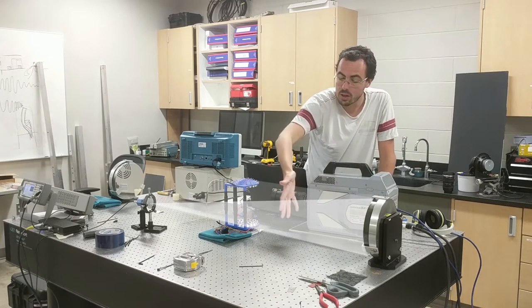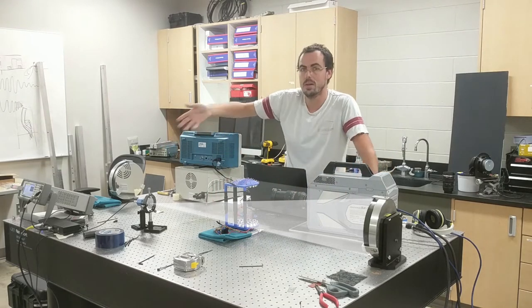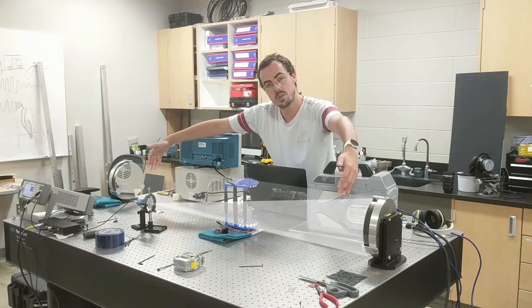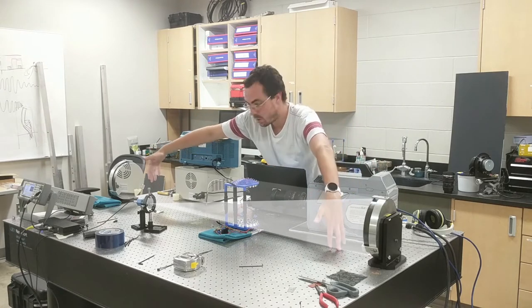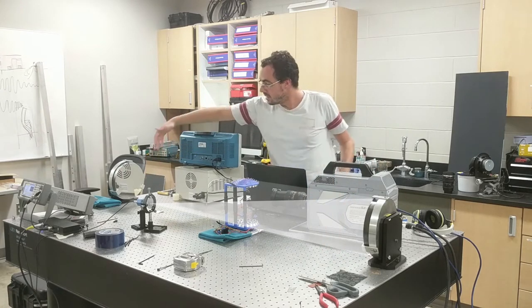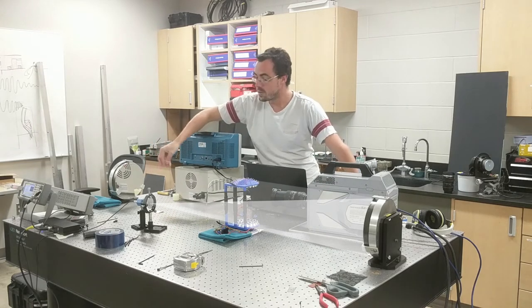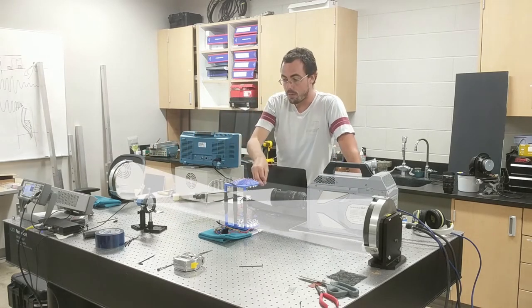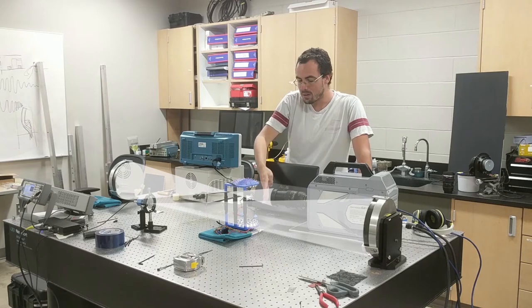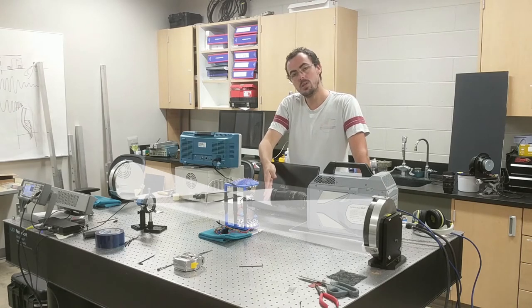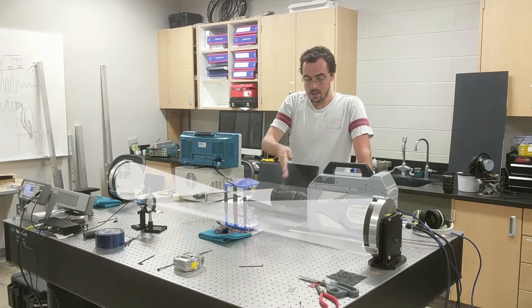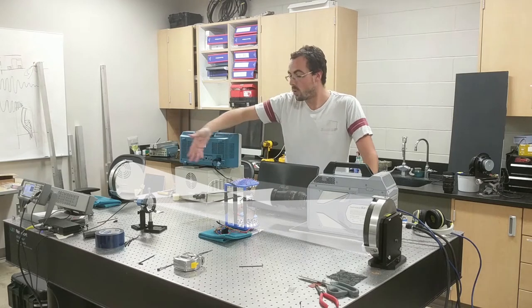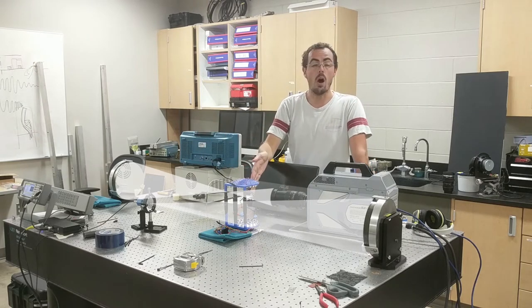And so there exists a collimated beam between these two mirrors. This mirror here then focuses the light again at the focal point, which is about right in front of the camera lens. And then the camera lens is here just to define where exactly I want to be focusing on.